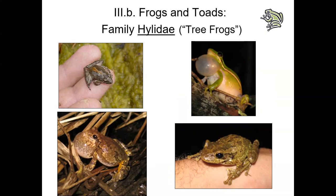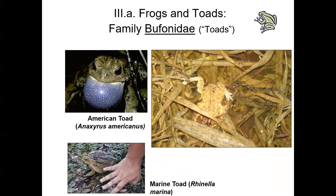Most Hylids are arboreal, but some are aquatic and some even fossorial — with 850 species there's a lot of variation. All return to water to breed and can be found in habitats from savannas and woodlands to floodplain forests. Eggs are deposited in egg masses that can range from the size of your thumbnail up to a softball or volleyball. External fertilization is used by all 850 members. Diet consists of small insects and spiders. Tree frogs are found in North and South America, Europe, Asia, and Australia. Indiana has six species representing three genera.